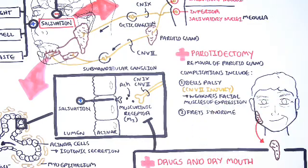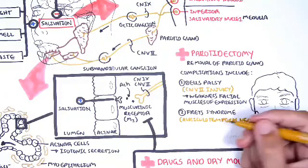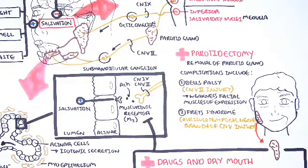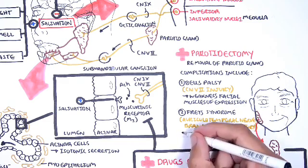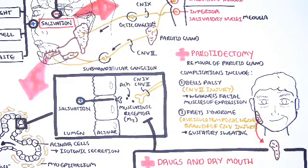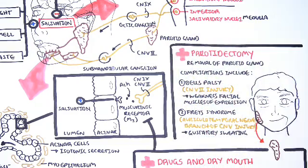Frey's syndrome is another interesting complication of parotidectomy, and this is caused by auriculotemporal nerve injury, which is a branch of cranial nerve number 5, the trigeminal nerve. Injury to the auriculotemporal nerve will cause the affected side to have gustatory sweating, which is symptoms of profuse perspiration.